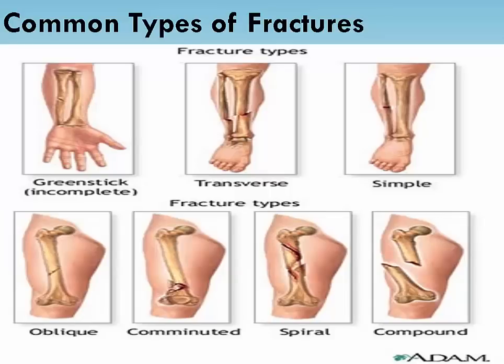Common types of fracture. A greenstick fracture is on one side of the bone, causing a bend on the other side of the bone. A transverse fracture is at right angles to the long axis of the bone. A closed or simple fracture is when the bone is broken but the skin is not lacerated. An oblique fracture is diagonal to a bone's long axis.